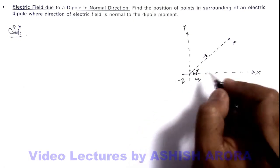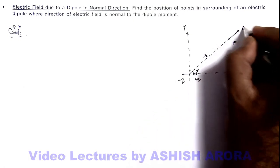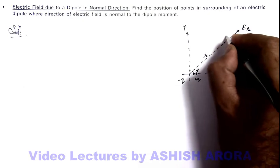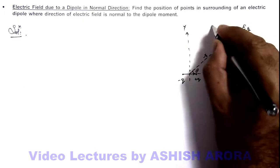Then due to this dipole we know one electric field exists in radial direction, that is Er, and other is a transverse electric field, that is E theta.